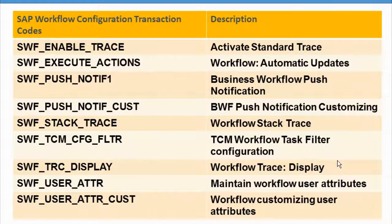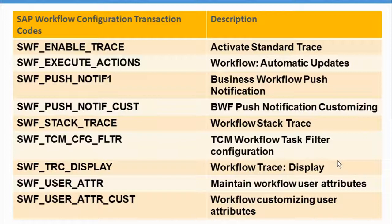I have divided all the transaction codes based on the type of things they do. The first category is SAP Workflow Configuration transaction codes. We have a transaction called SWF_ENABLE_TRACE — we already had something similar in SWEL, but this was created specifically to control authorization. The next is SWF_EXECUTE_ACTION, which handles workflow automatic updates.